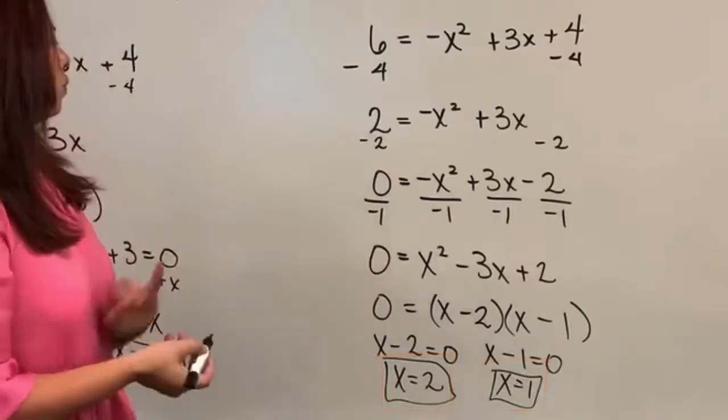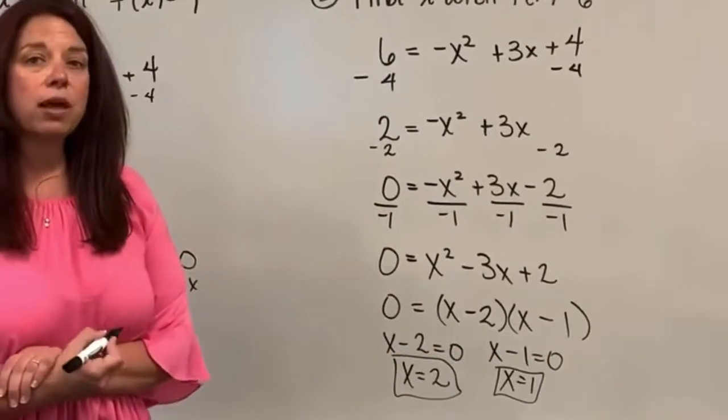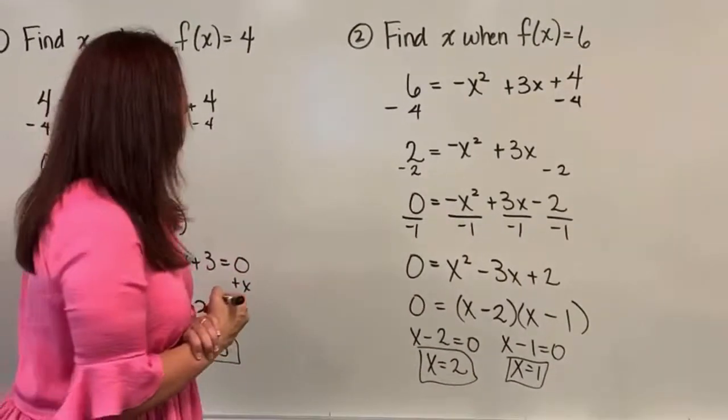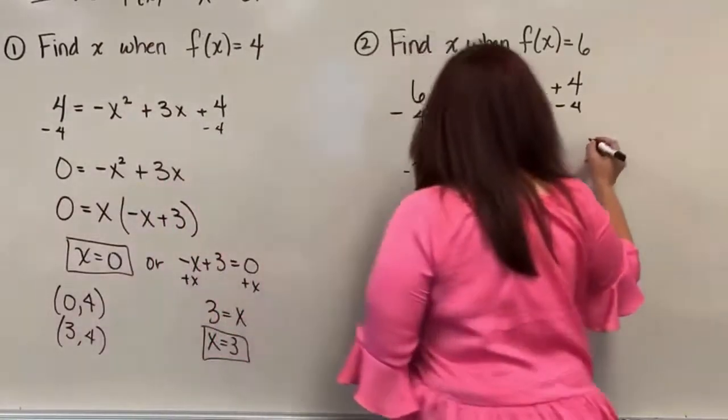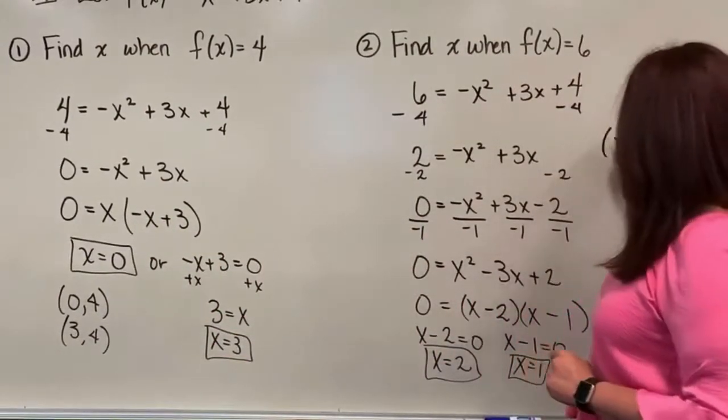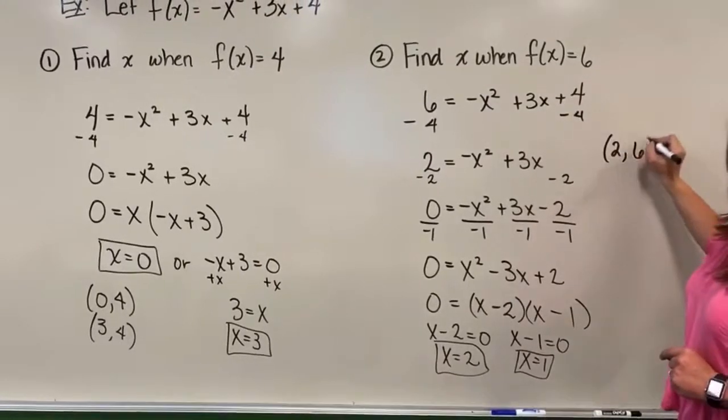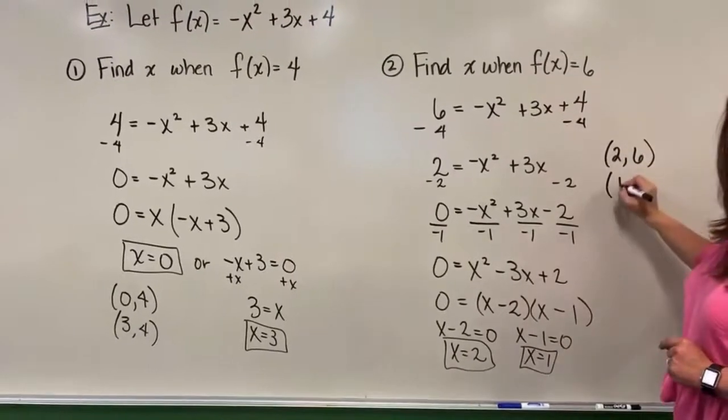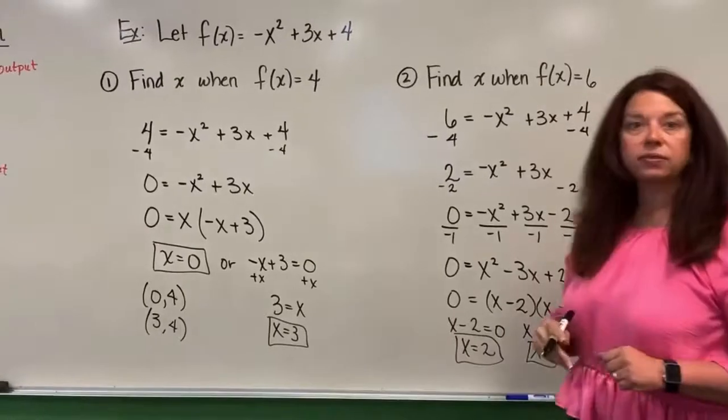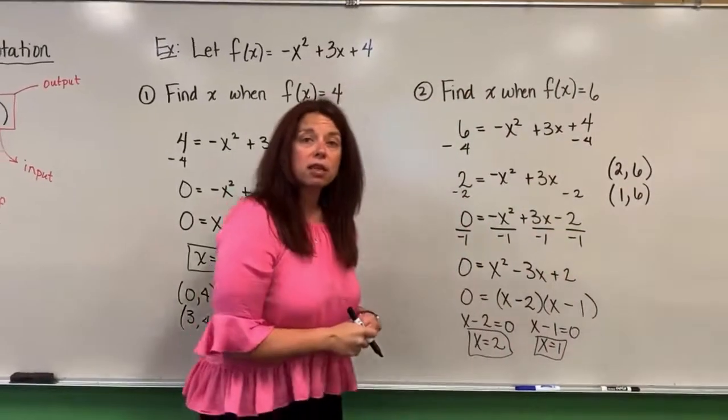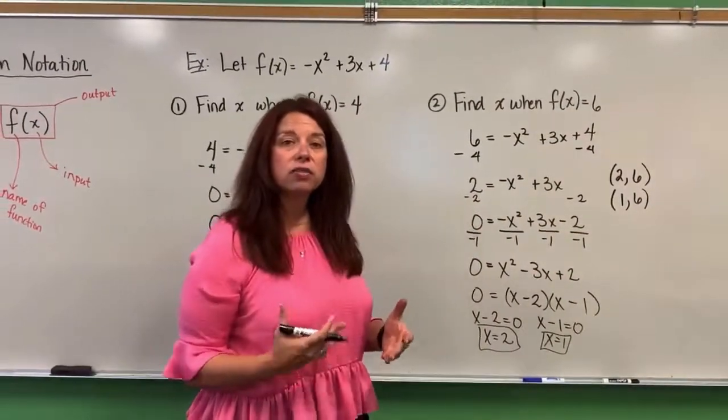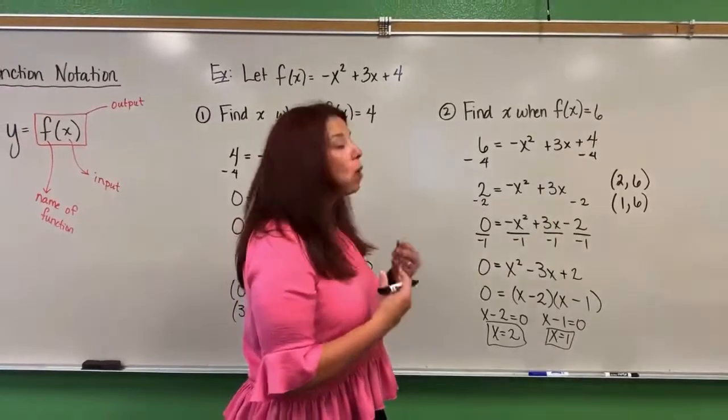And just like we did previously, we got two input values for the same output value. And if we wanted to write those as an ordered pair, I would simply have an input of positive two gives me my output of six. And an input of positive one also gives me an output of six. So now you can see a little bit more about how to tackle this function notation when we are given an output value, but we have to find an input value.